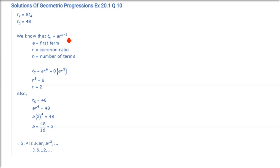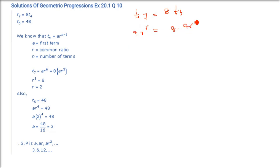Next: the 7th term of a GP is 8 times the 4th term, and the 5th term is 48. Find the GP. T7 = a·r^6 and T4 = a·r^3. Dividing gives r^3 = 8 = 2^3, so r = 2.